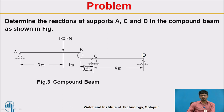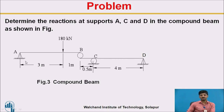Let us discuss one problem. Determine the reactions at supports A, C, and D in the compound beam as shown. B is the internal pin or roller. As discussed in our steps, AB is the topmost beam, so first identify the reactions on segment AB. Whatever reactions are present on AB act in a downward direction as a point load on the second segment. Draw the free body diagram for the given figure and mention the external loads.